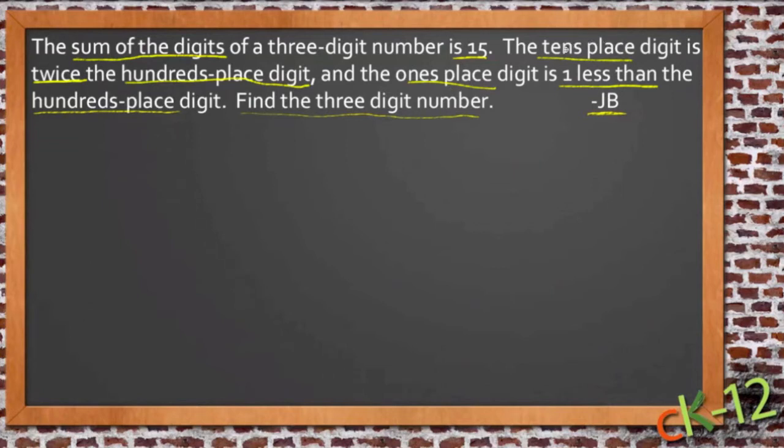Now it says it's comparing the tens place digit to the hundreds place digit and the ones place to the hundreds place digit. So I'm going to make the hundreds place digit be x, since it's the one that's already compared to. So if the hundreds place digit is x, then the tens place digit is twice the hundreds place digit. So that's just 2x. If this represents one of them and this one is twice as big, it's two of those.